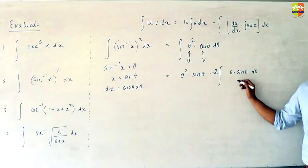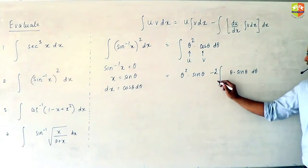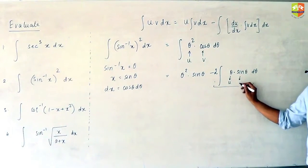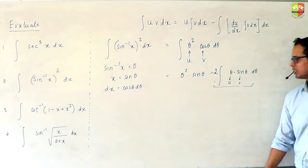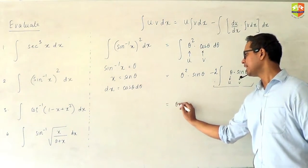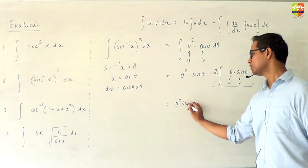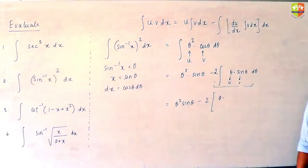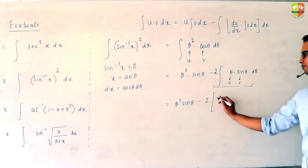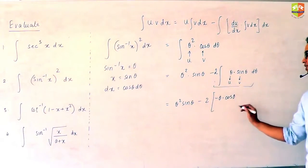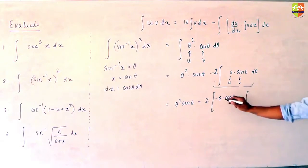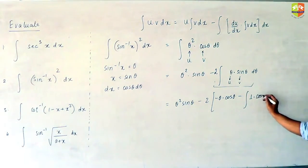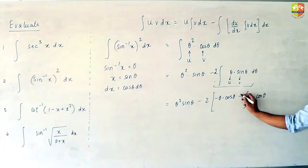Now this integral of θ·sin θ is again a problem, so I have to apply integration by parts again here — treating 2θ as u and sin θ as v. The integral of sin θ is −cos θ. So it becomes −2θ cos θ minus the integral of −cos θ times 1 dθ, which gives 2θ cos θ plus 2 sin θ.